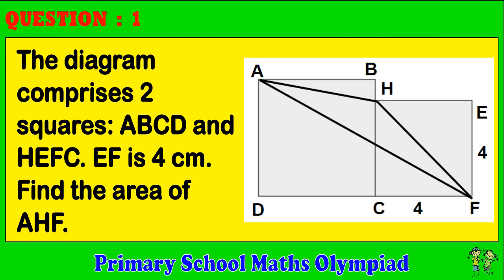Question 1. The diagram comprises two squares, ABCD and HEFC. BF is 4 centimeters. Find the area of AHF.